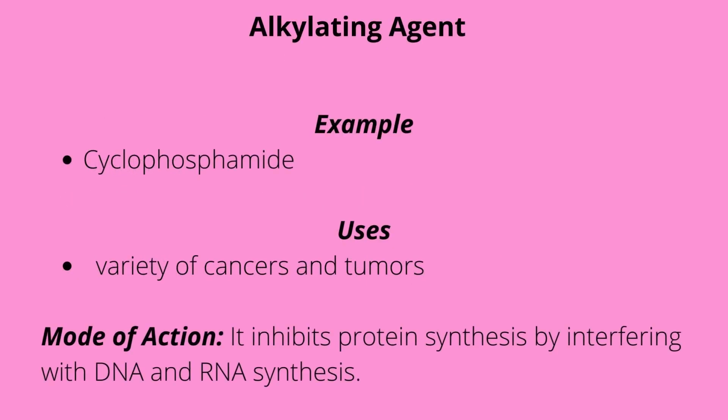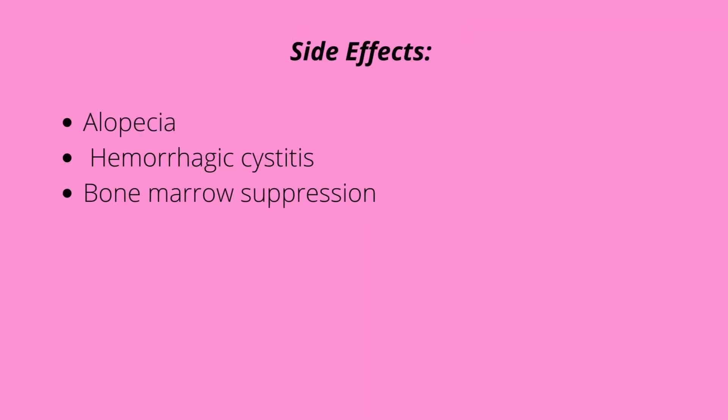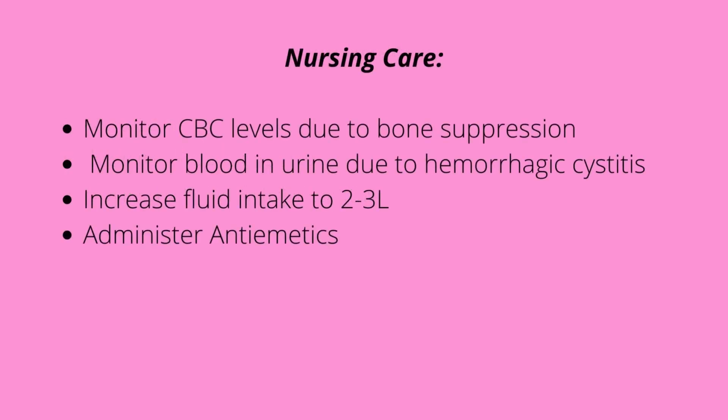Alkylating agents — cyclophosphamide is an example. Its uses include treating various cancers and tumors. Its mode of action inhibits protein synthesis by interfering with DNA and RNA synthesis. Side effects include alopecia, hemorrhagic cystitis, and bone marrow suppression leading to thrombocytopenia, leukopenia, and anemia. Nursing care includes monitoring CBC levels, monitoring blood and urine for hemorrhagic cystitis, increasing fluid intake to two to three liters to flush it out, and administering antiemetics for nausea and vomiting.